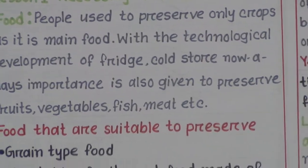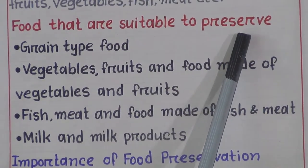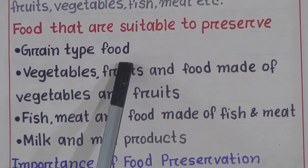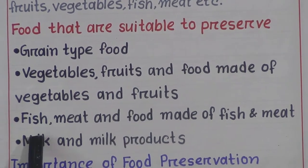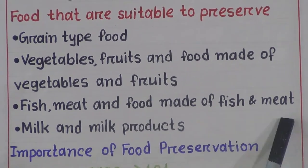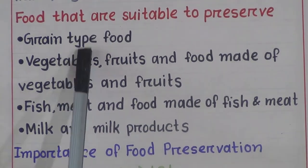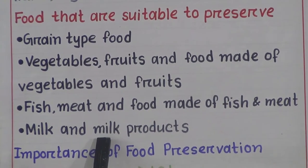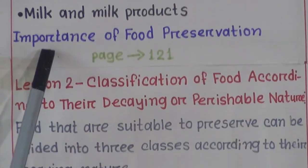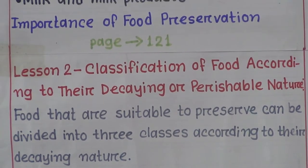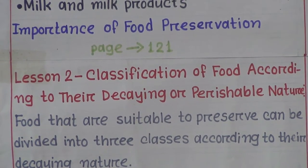Now we'll learn the food that are suitable to preserve: green vegetables, fruits and food made of vegetables and fruits, fish, meat and food made of fish and meat, milk and milk products. These are the foods that are suitable to preserve. Now we'll learn the importance of food preservation.